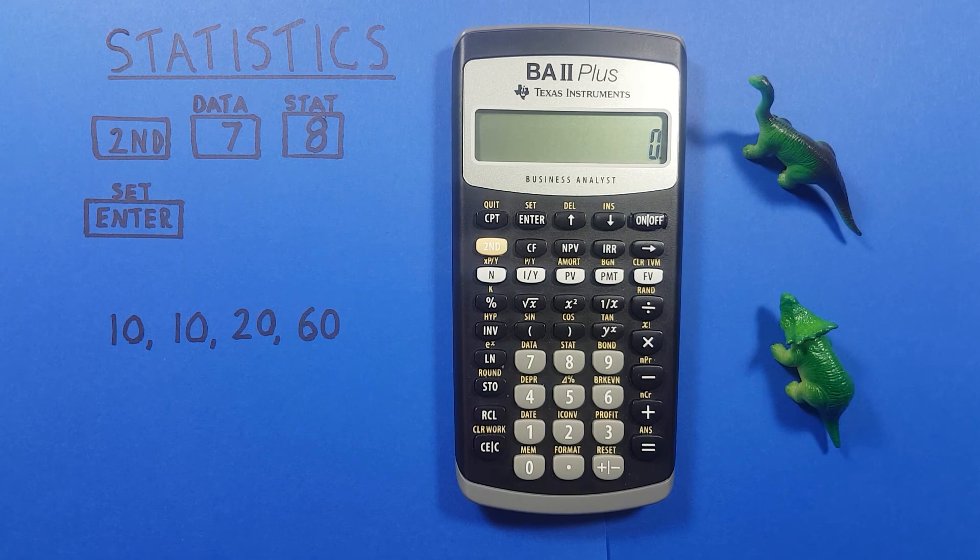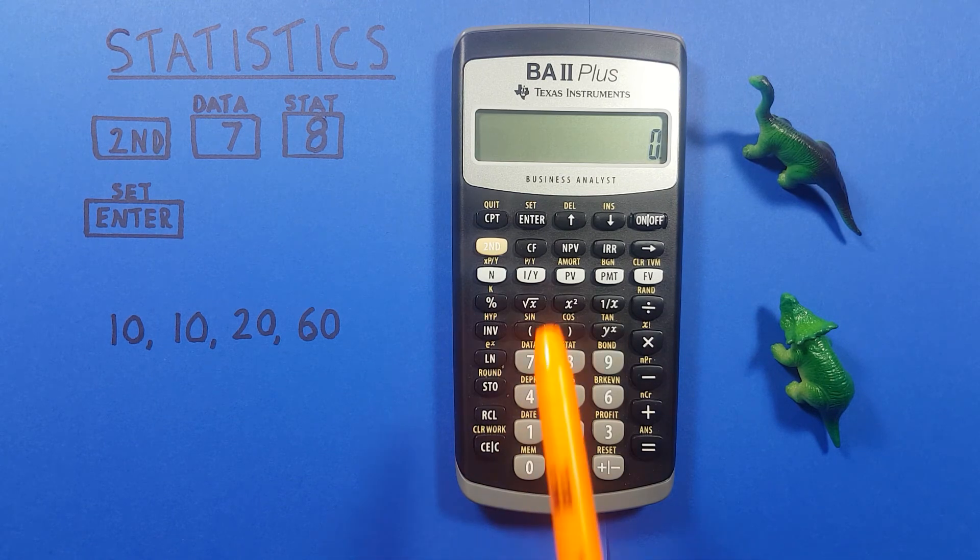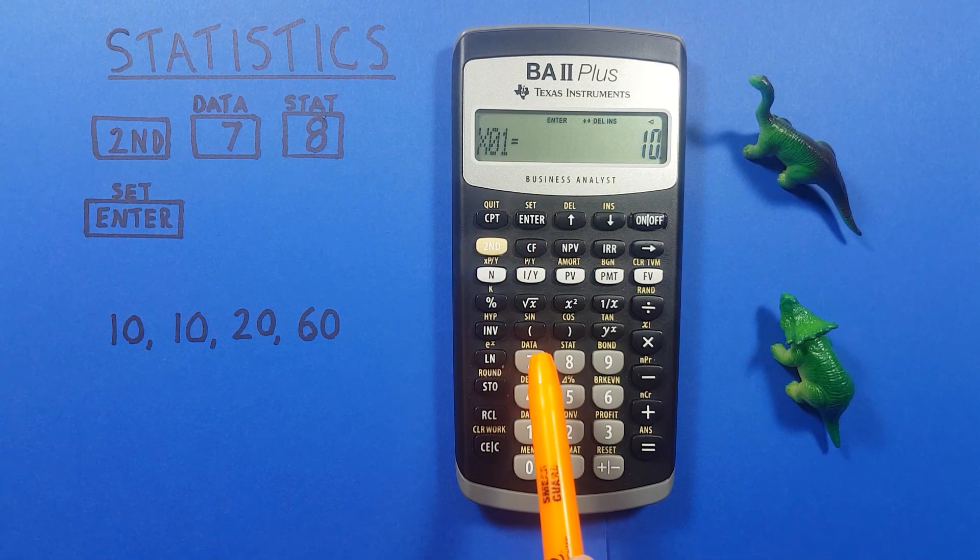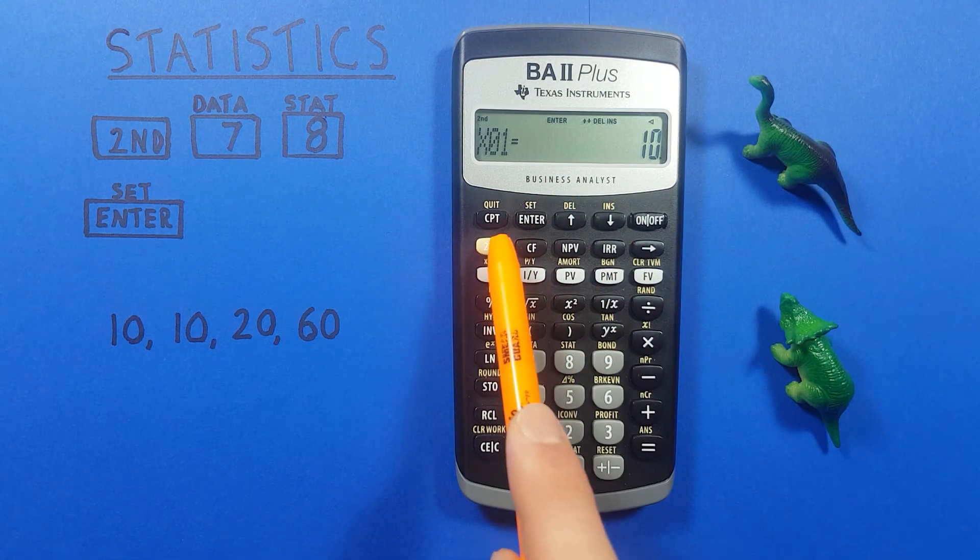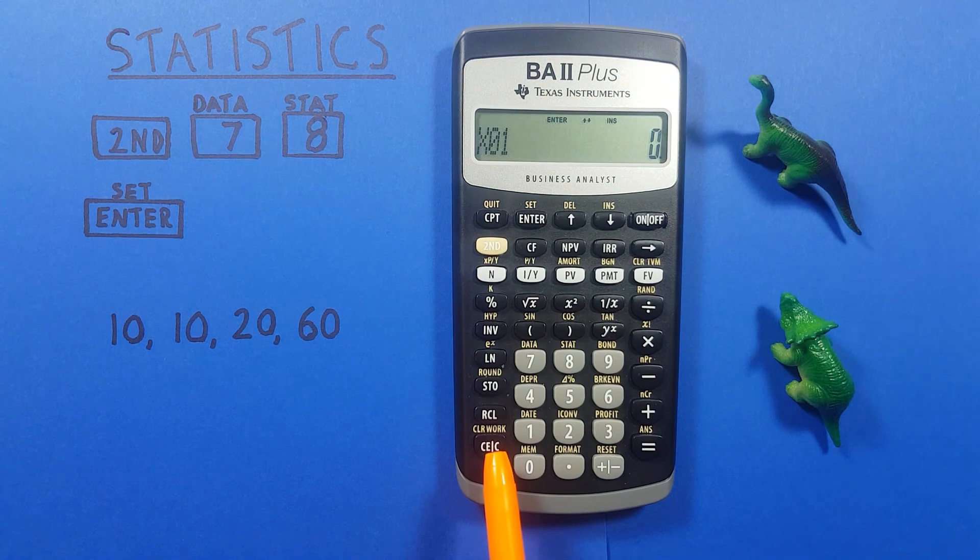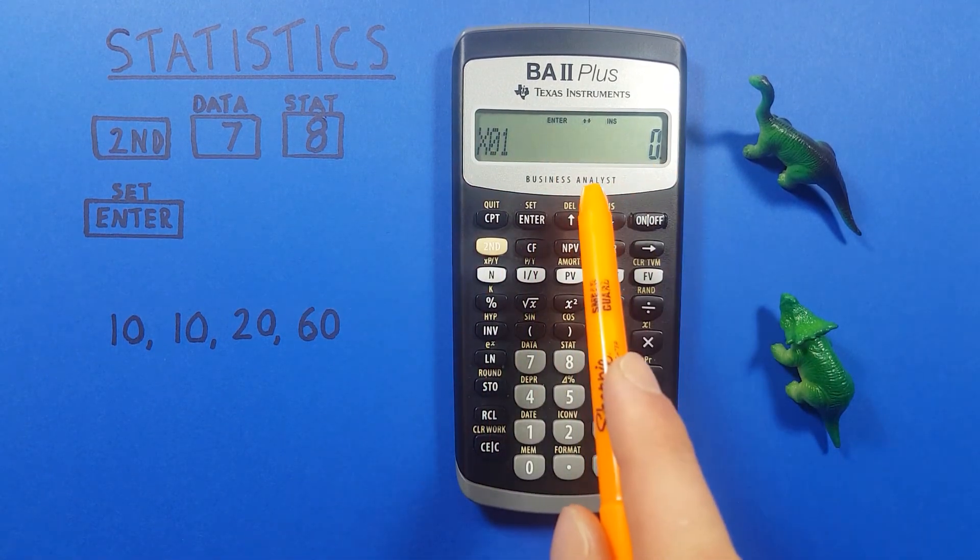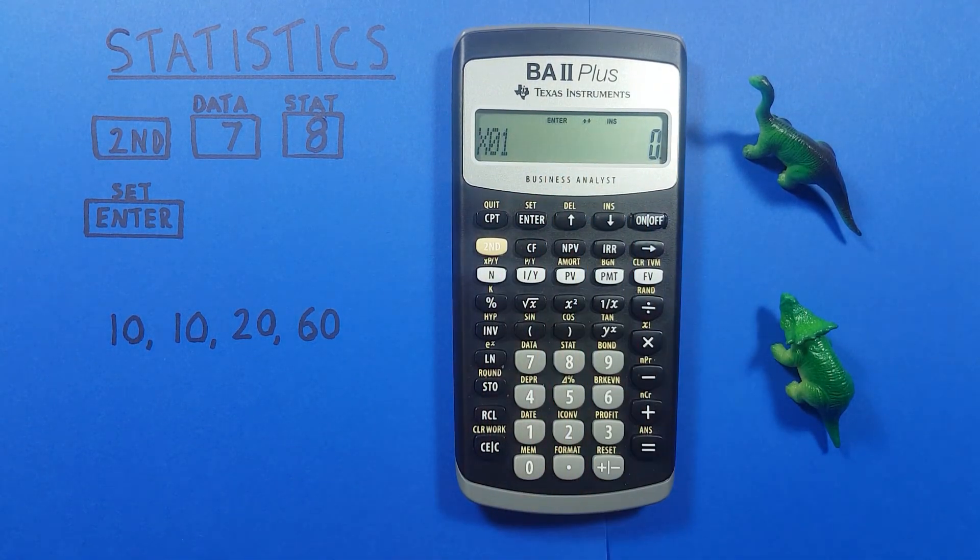Once we're done working with our data set and we want to clear it so that we can enter a new data set, we press second data so that we're back to this screen and then if we press second clear work all entered data has been cleared and we're ready to enter a new data set.